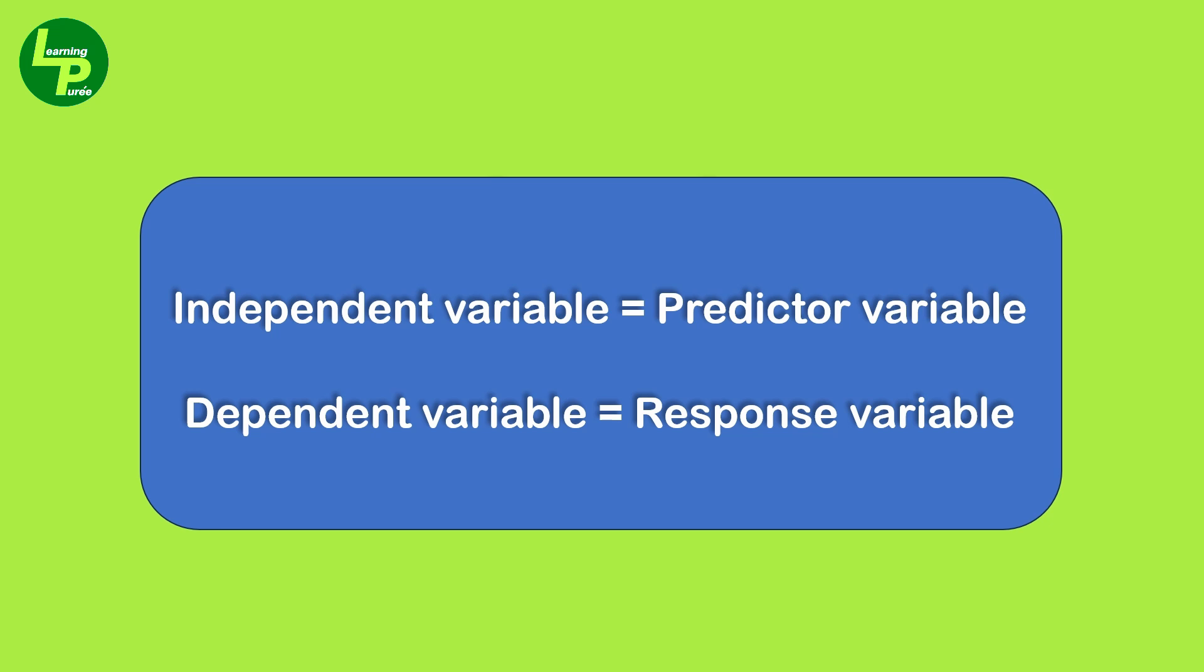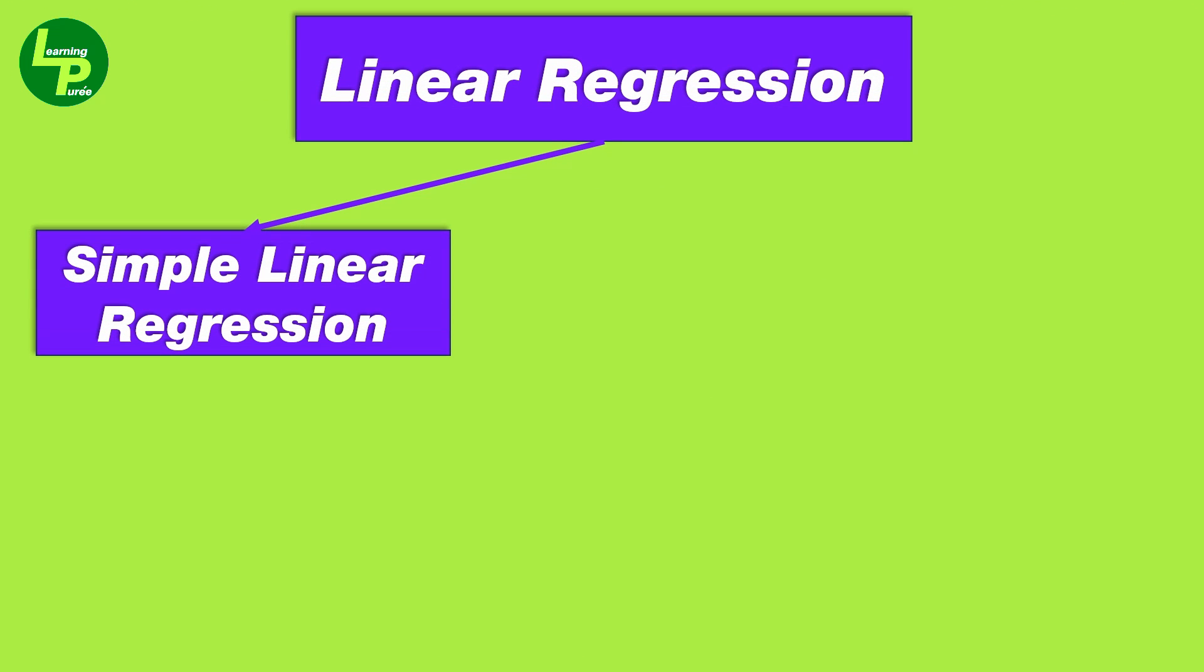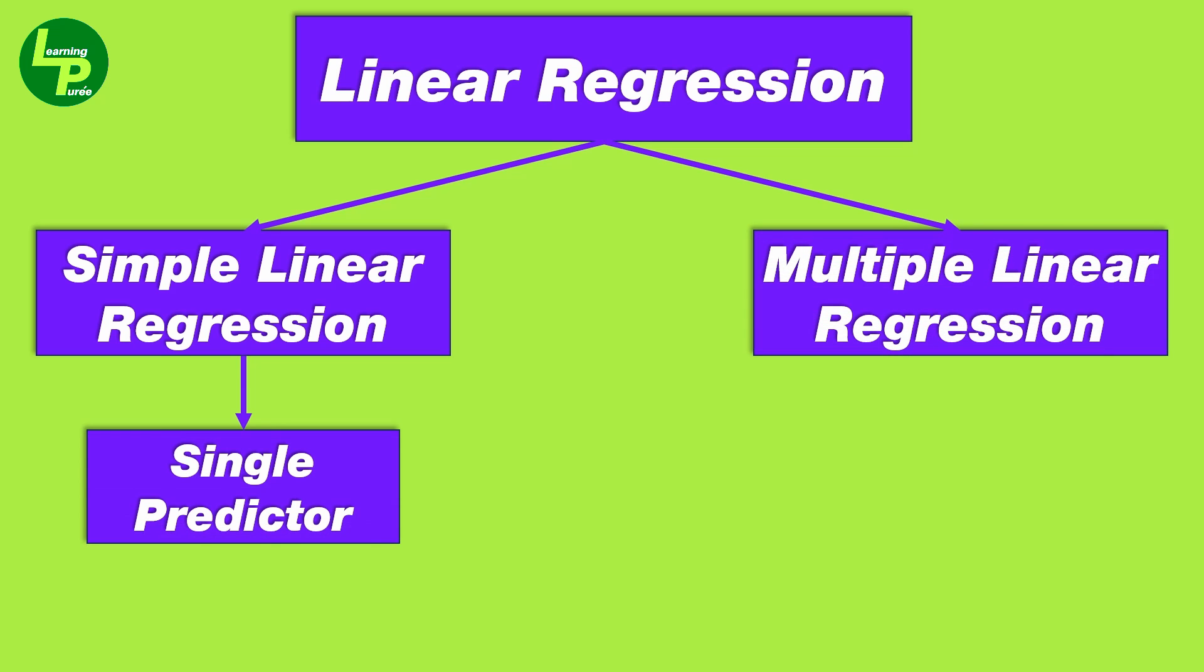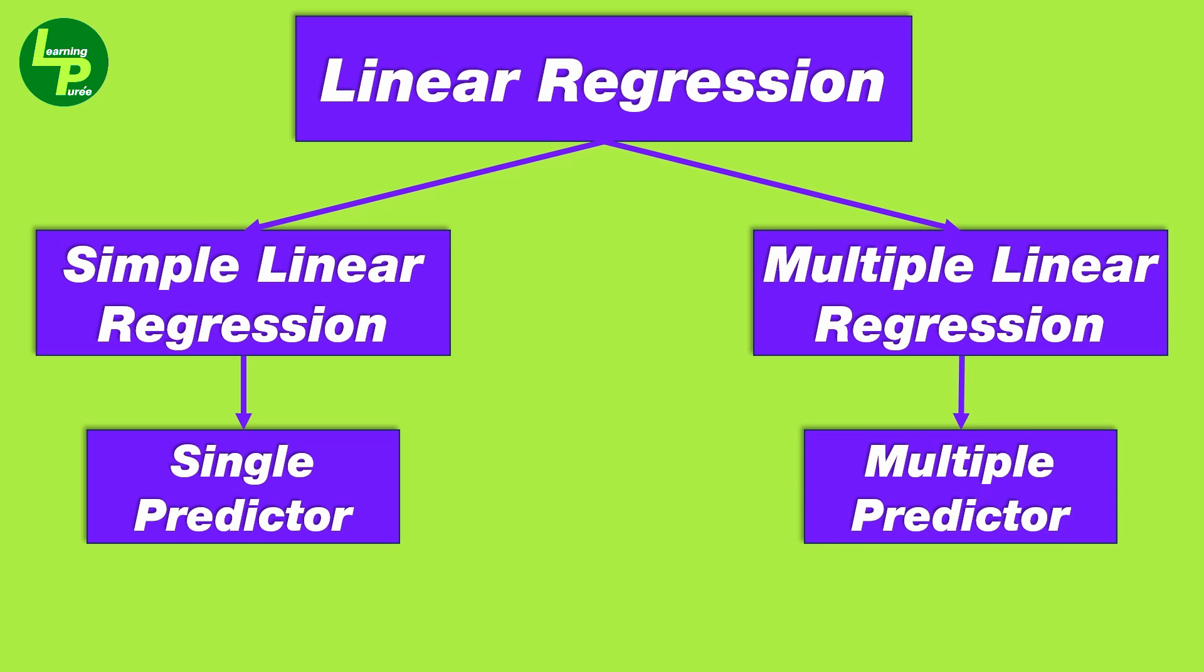There are two main types of linear regression techniques: simple linear regression and multiple linear regression. Simple linear regression focuses on a single predictor variable, while multiple linear regression incorporates multiple predictors, making it more suitable for complex scenarios.